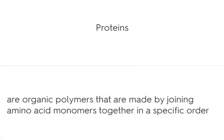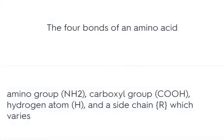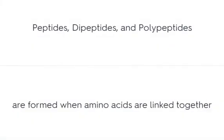Proteins are organic polymers that are made by joining amino acid monomers together in a specific order. The four bonds of an amino acid are: amino group, carboxyl group, hydrogen atom, and a side chain which varies. Peptides, dipeptides, and polypeptides are formed when amino acids are linked together.